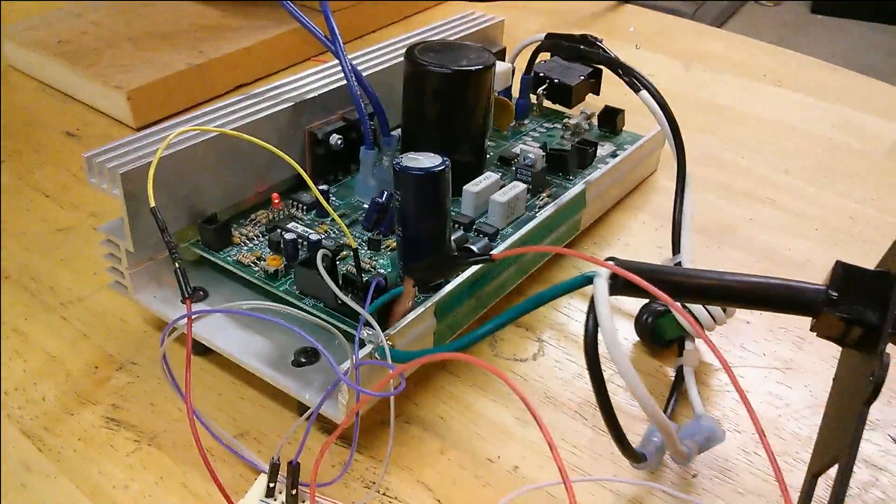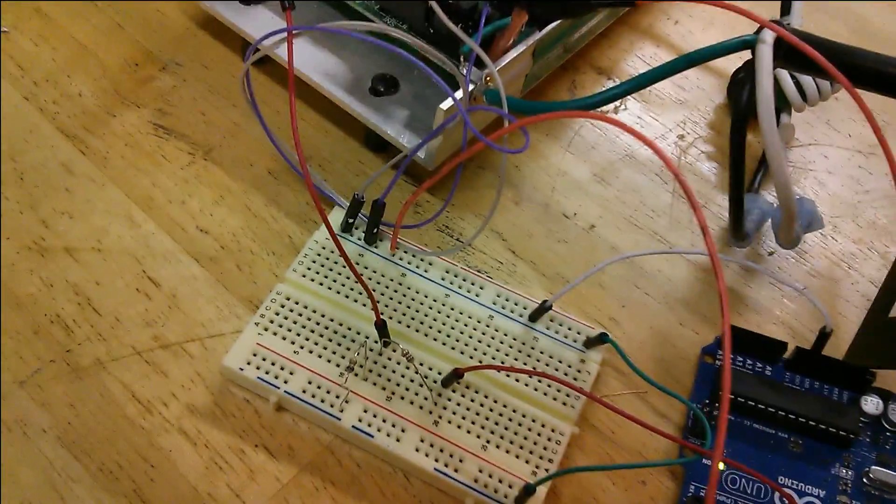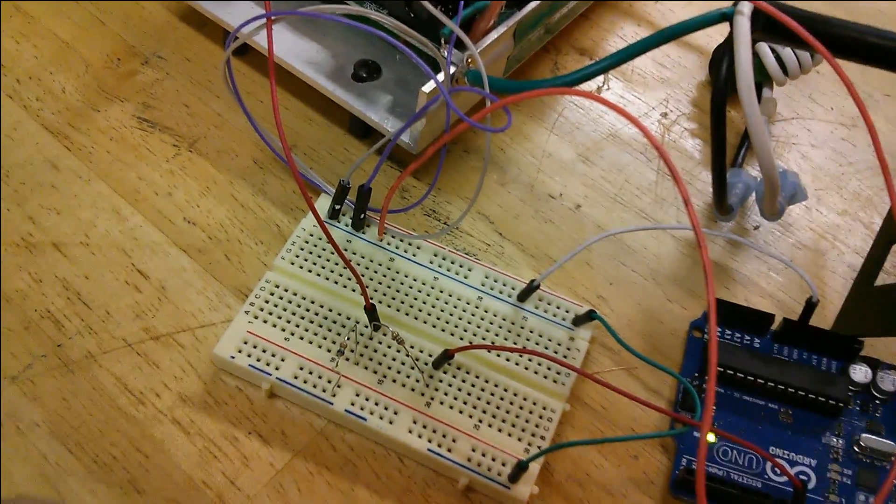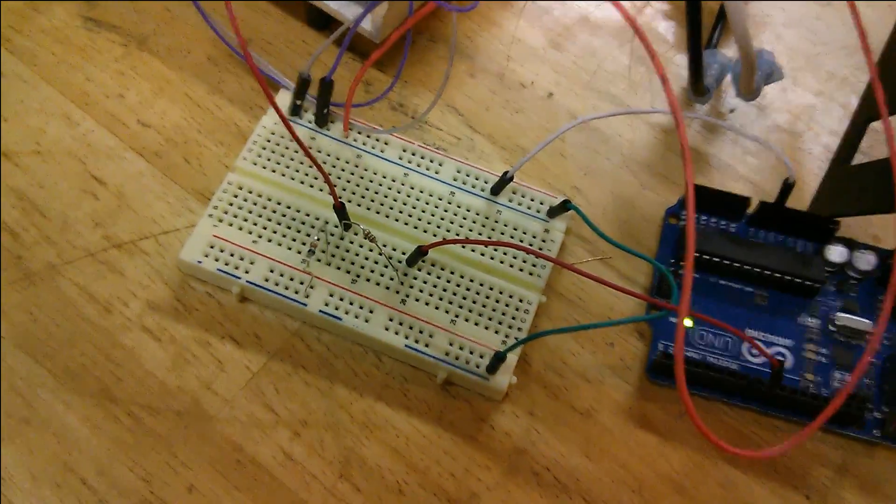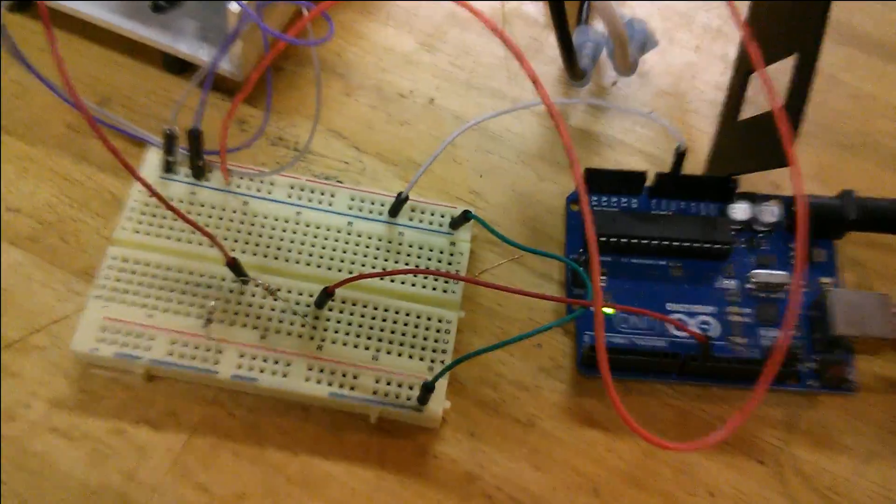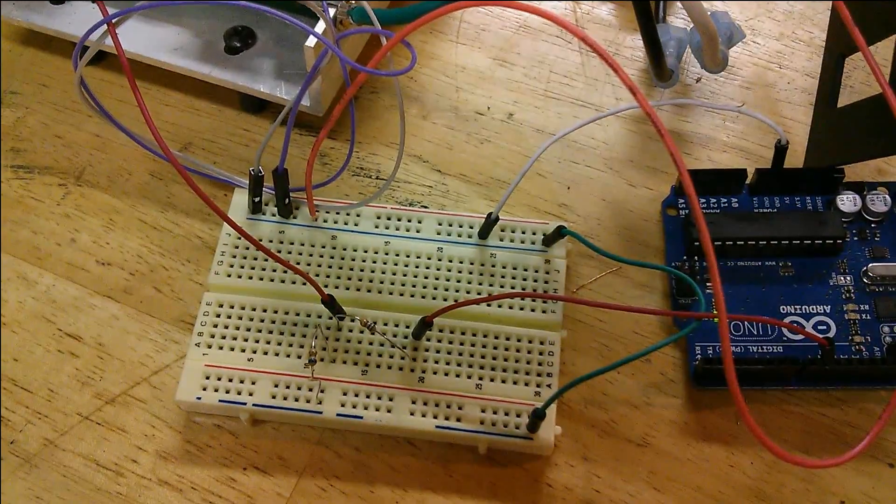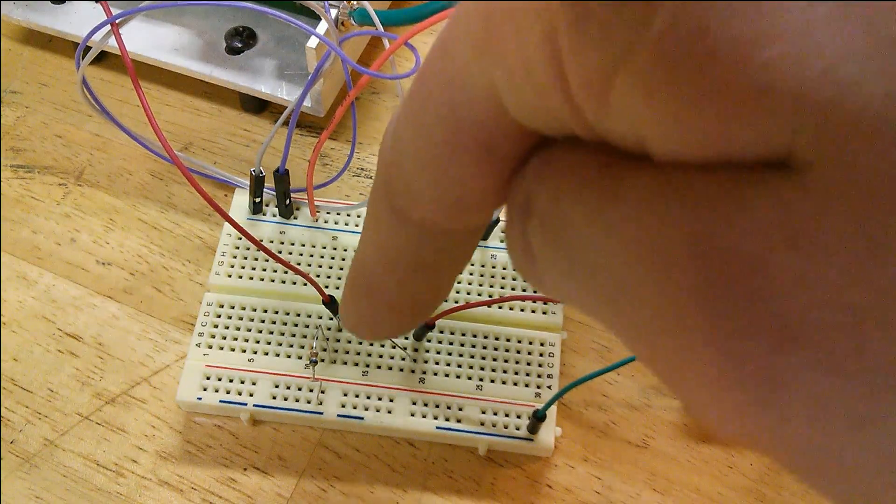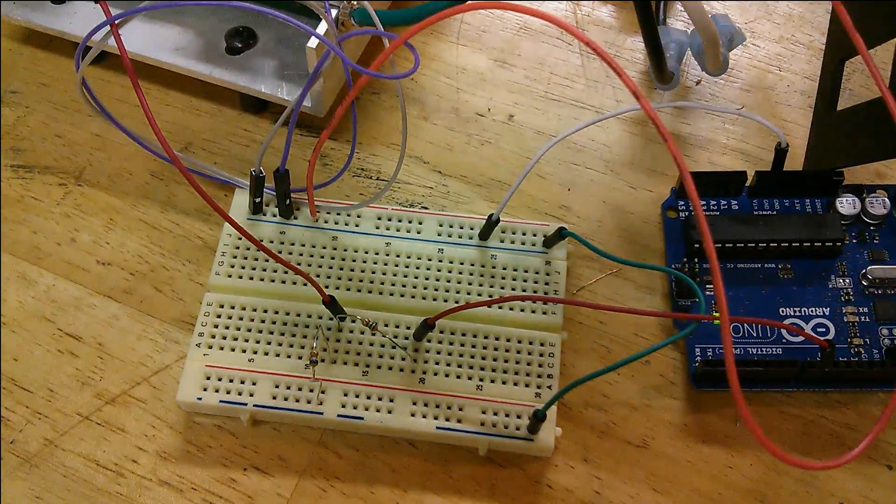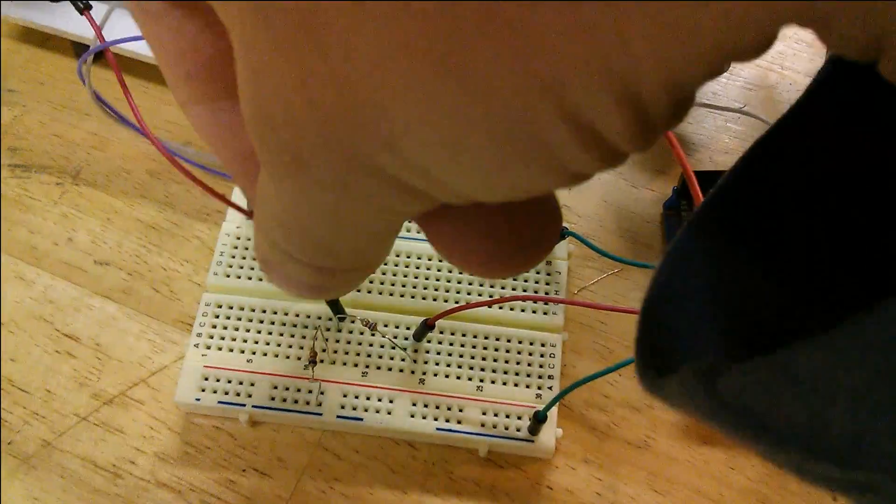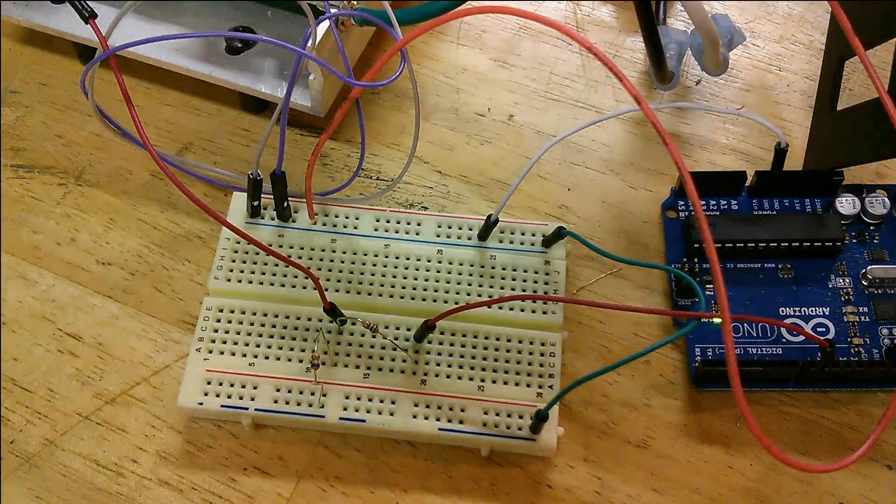So the circuit itself is super simple. Really, the only thing going on is sharing the ground, and then on pin 9, I've got a digital output, and that digital output runs through a 160-ohm resistor to that fourth pin on the motor driver.